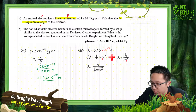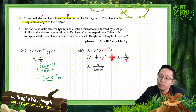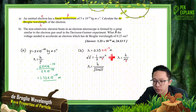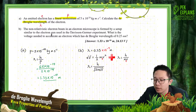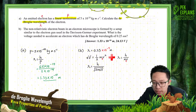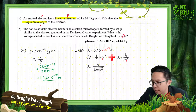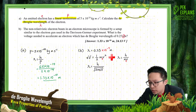The non-relativistic electron beam in an electron microscope is formed by a setup similar to the electron gun used in the Davisson–Germer experiment. What is the voltage needed to accelerate an electron which has a De Broglie wavelength of 0.25 nanometer? Be careful with the unit — it is nano, nanometer. Change to SI unit meter; nano is 10⁻⁹. The question asks for the voltage.